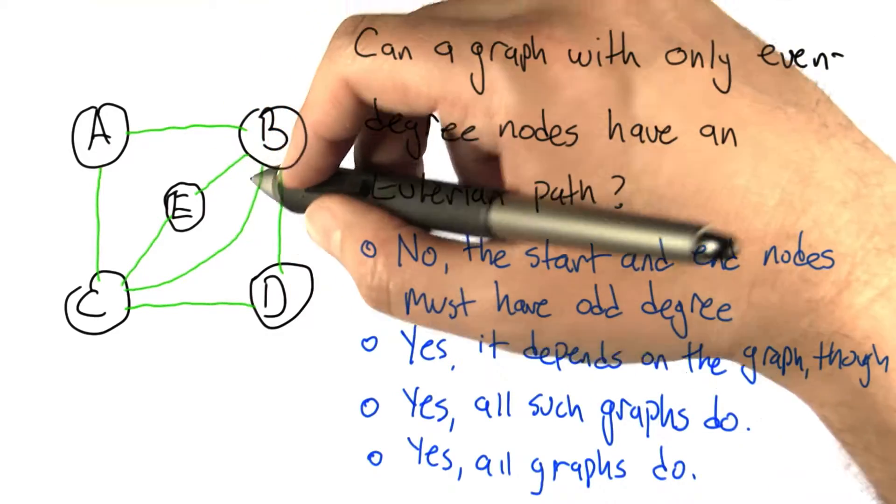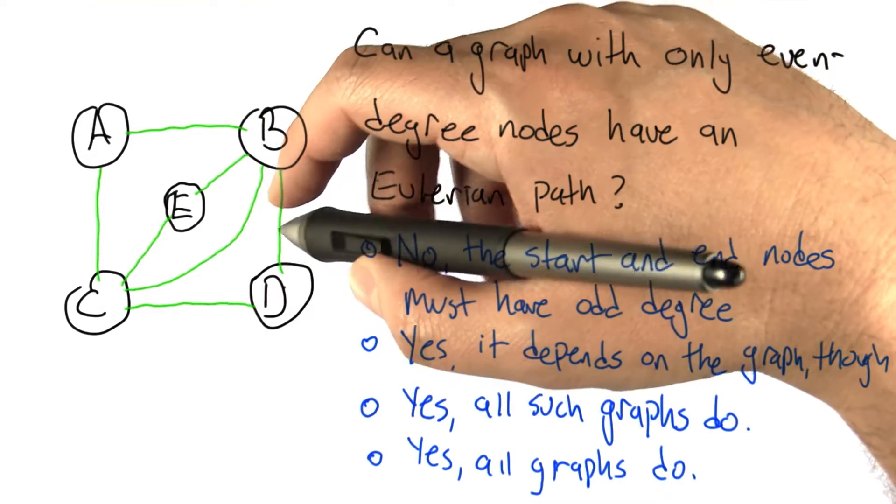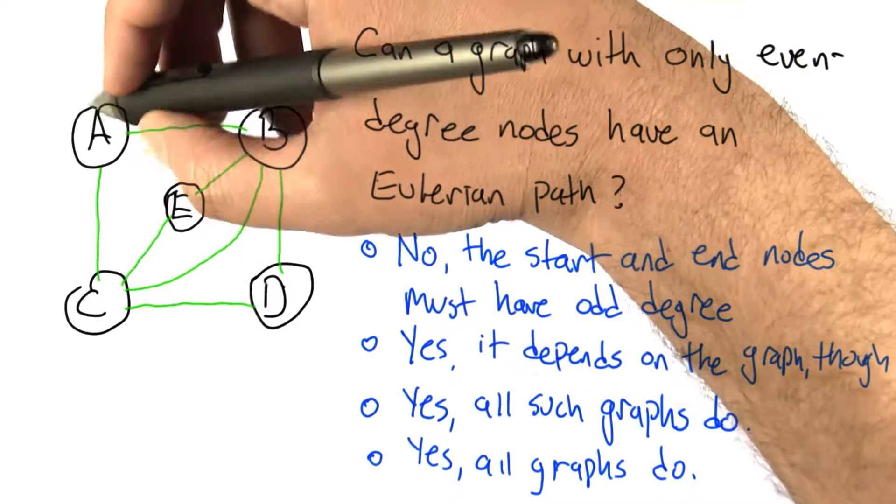All right, let's look at the answer. Here's a particular graph where all the nodes are of even degree, and let's see what happens when we try to follow an Eulerian path.